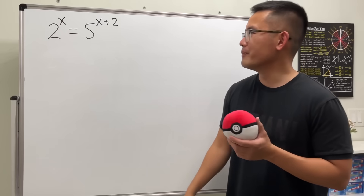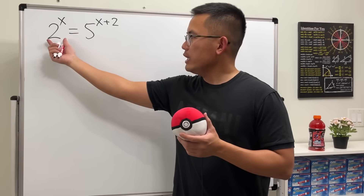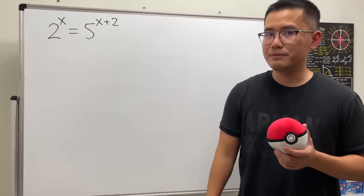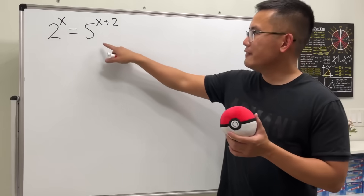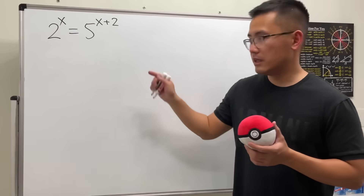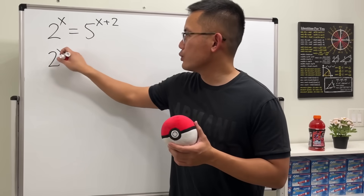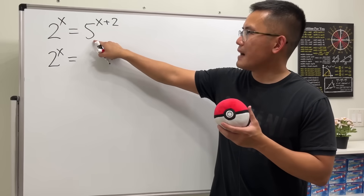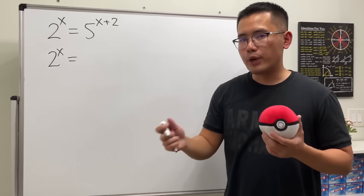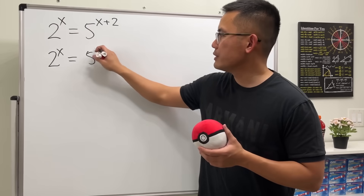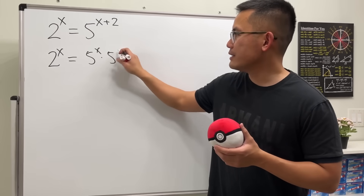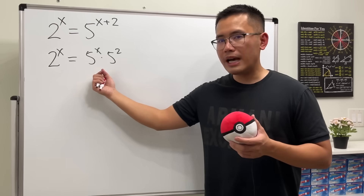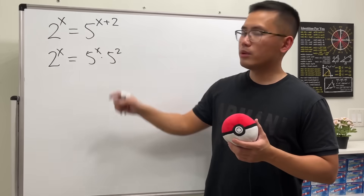The idea is that if we can put exponential parts together on one side, that would be really helpful. Have a look. I'm going to write down 2 to the x, and that's equal to — when we have 5 to the x plus 2, we can break them apart as 5 to the x times 5 to the second, because when they multiply, we just have to add the exponents.